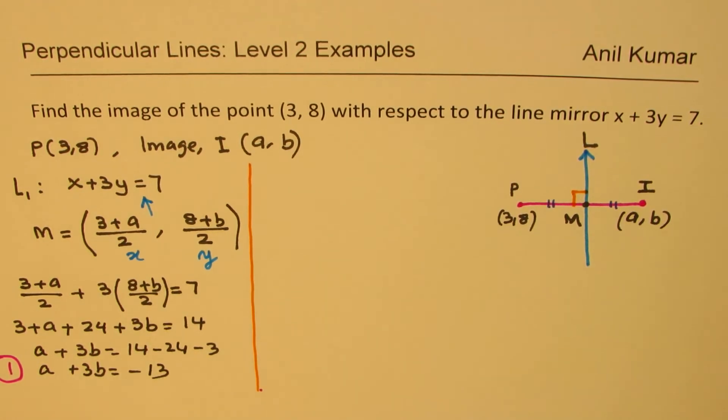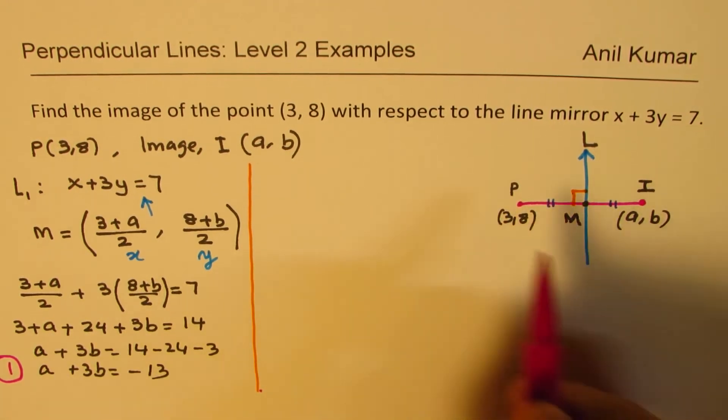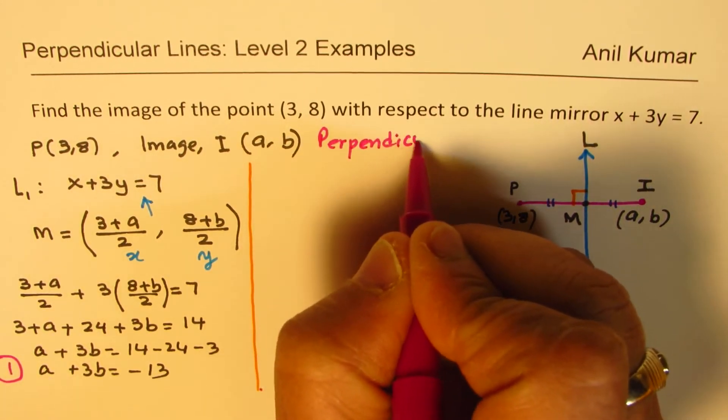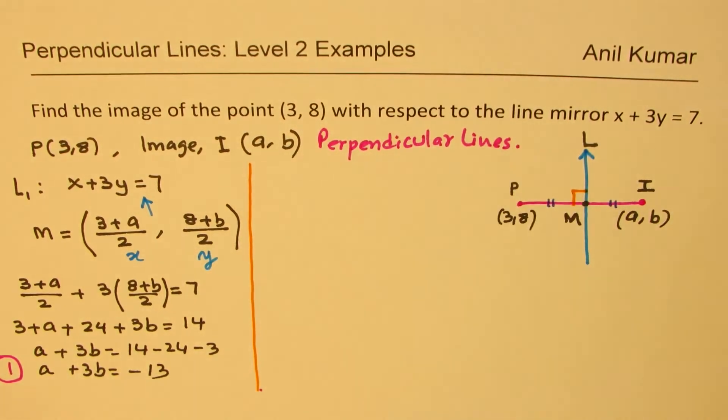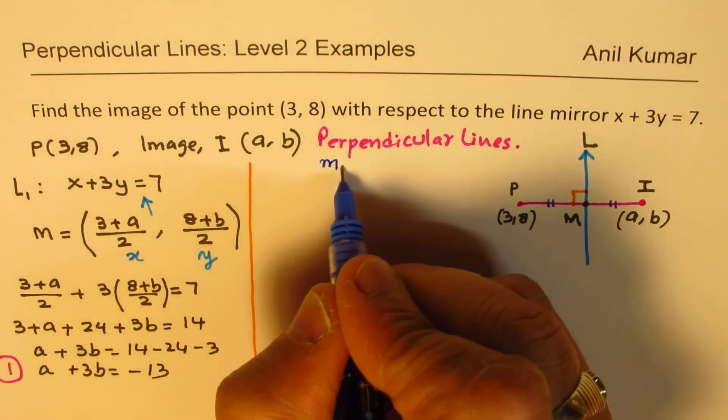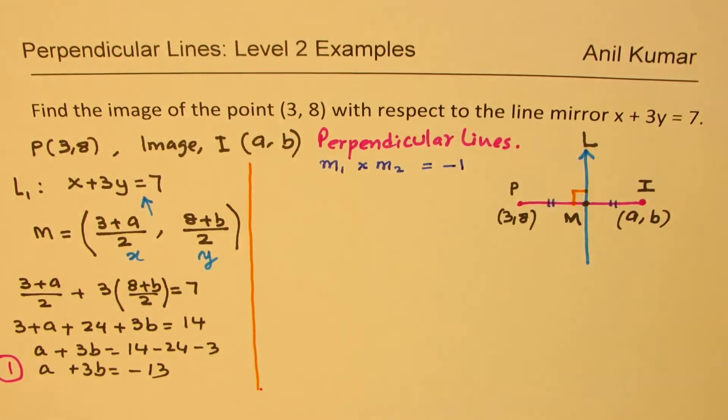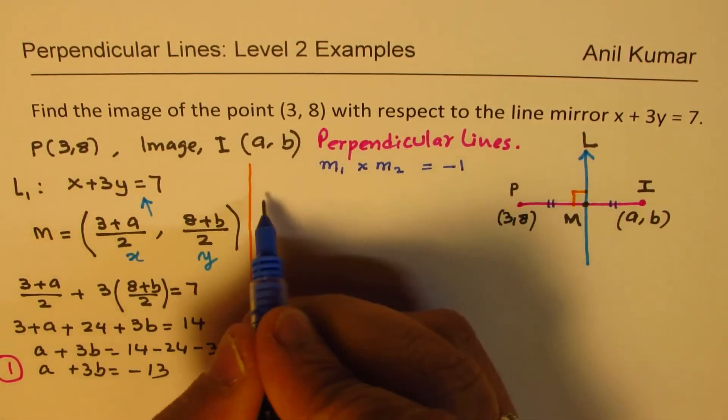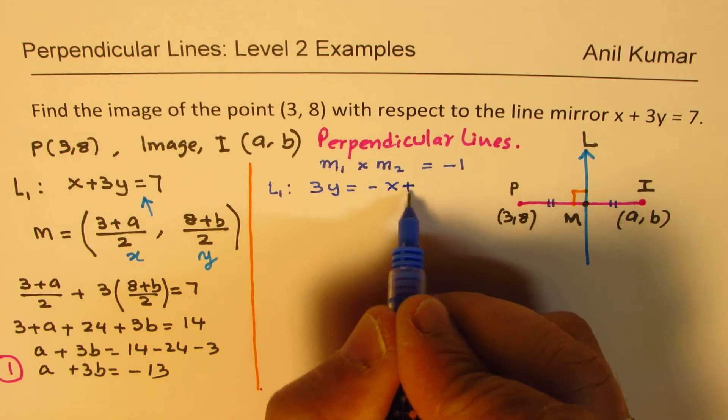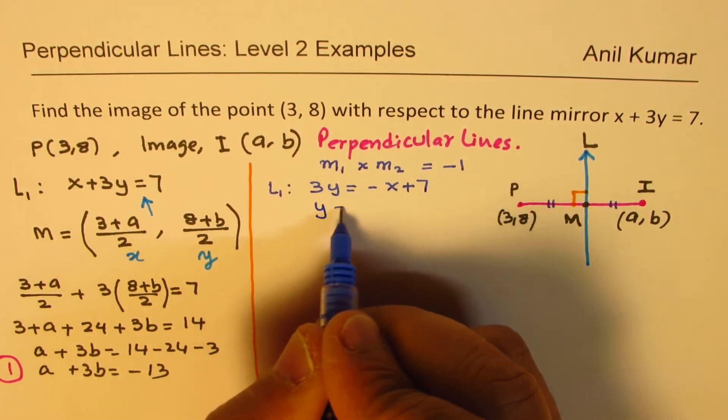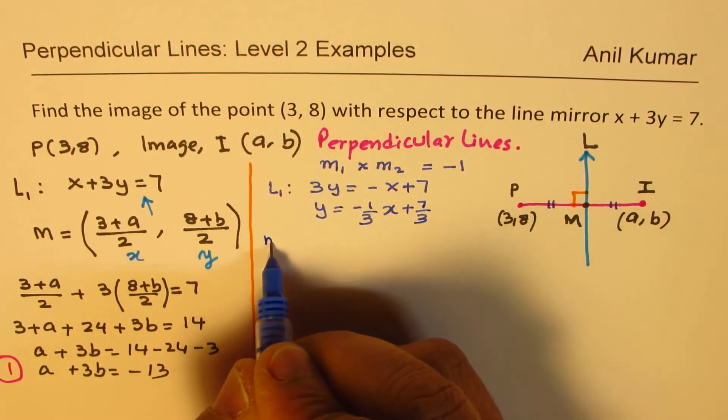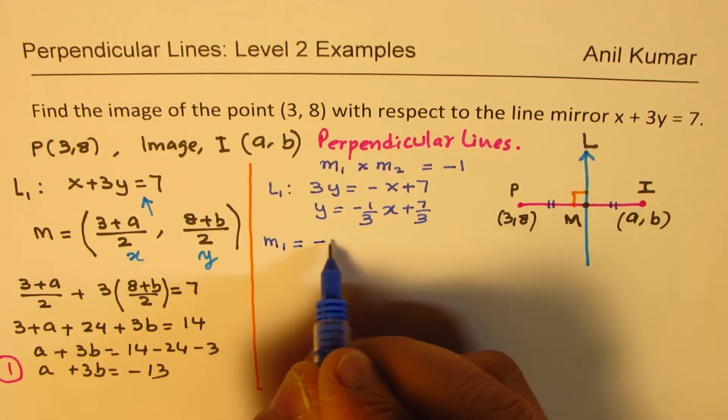The second equation which we are going to get is from the concept of slope. So these are perpendicular lines. Now in perpendicular lines, we understand that the slope of m1 times slope of m2 is negative 1. What is the slope of this given line? Line L1, let's rearrange, so we get 3y equals to -x + 7. That means y equals to -1/3 x + 7/3. So we know that the slope m1 is basically equal to -1/3.